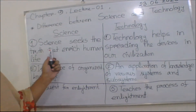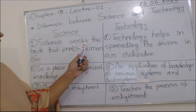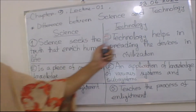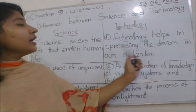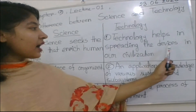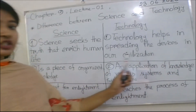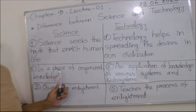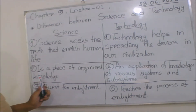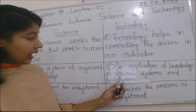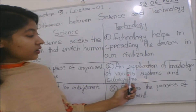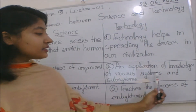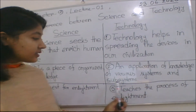Let's talk about the differences between science and technology. First, science states the truth that enriches human life, whereas technology helps in spreading devices in our civilization. Second, science is a piece of organized knowledge, while technology is the application of knowledge of various systems and subsystems.